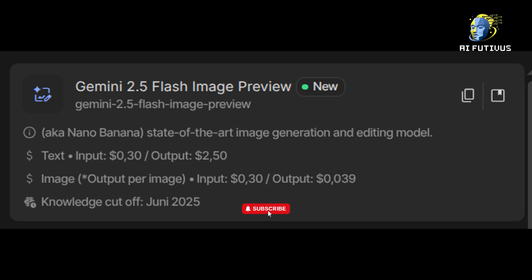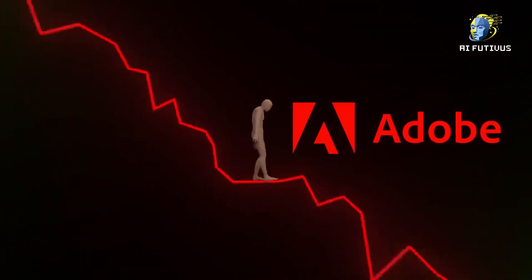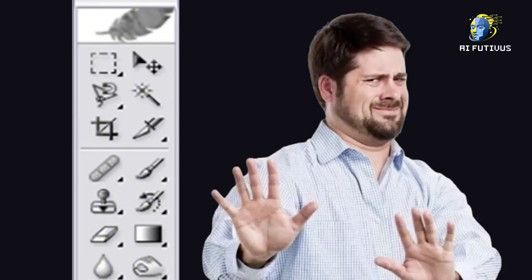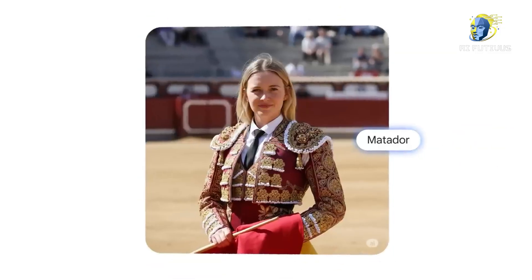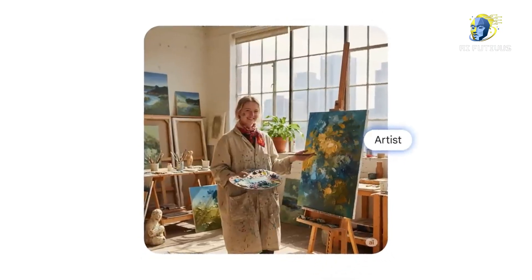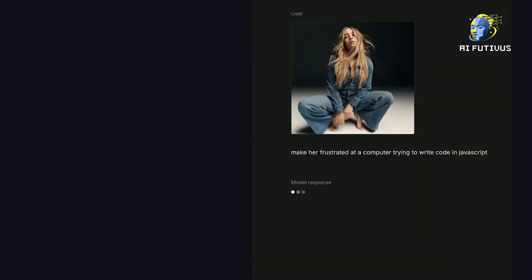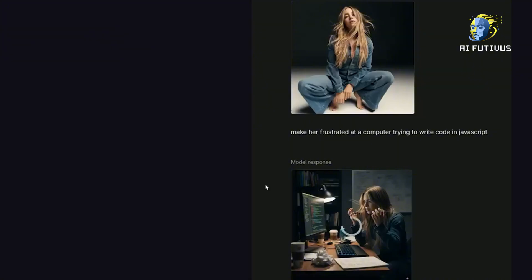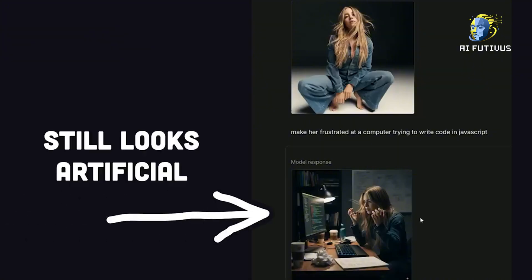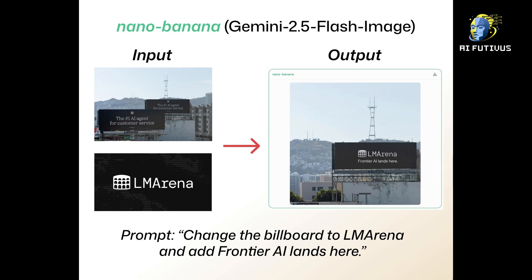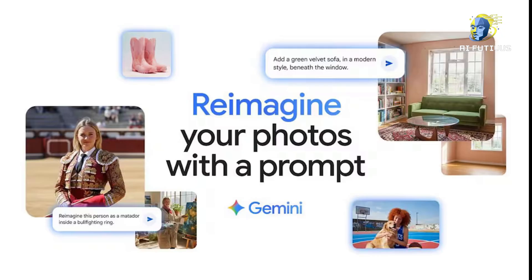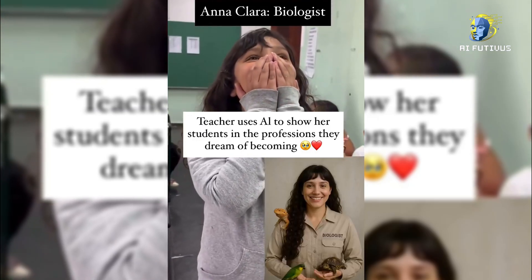Of course, with power comes responsibility, and Google knows this. That's why every image generated with Nano Banana comes with a visible watermark and an invisible digital watermark called SynthID. Because in a world where fake images can spread faster than truth, we need transparency — we need to know what's real and what's AI. Google is saying: we'll give you the tools, but we'll also make sure the world stays honest. It's a balance: freedom to create, but also responsibility to protect.